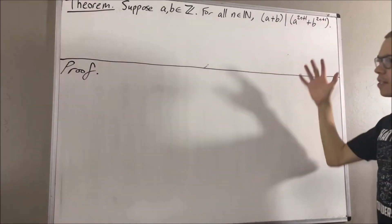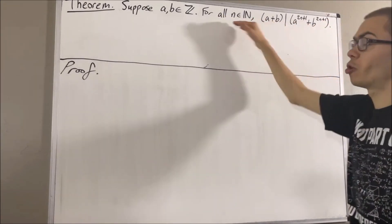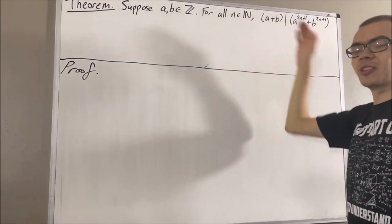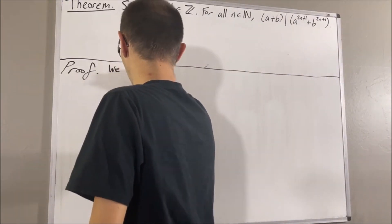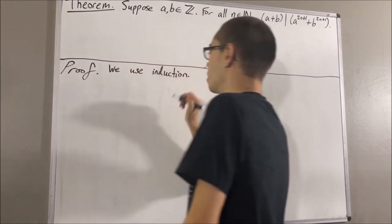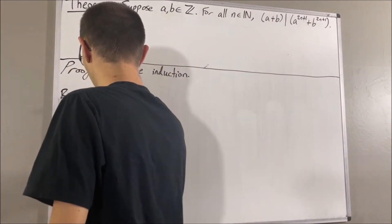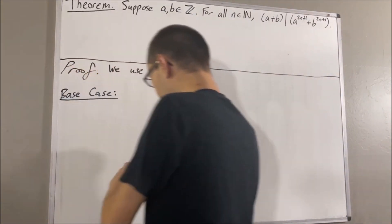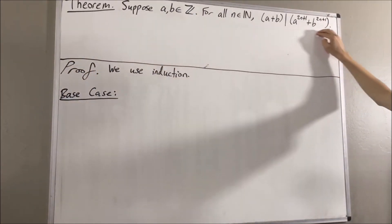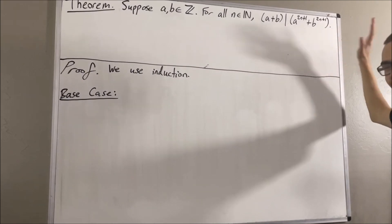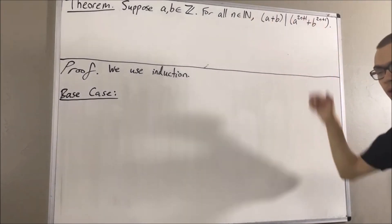Since we're trying to prove a statement about all natural numbers, let's use induction. So let's start with the base case. In the base case, we're trying to show that this is true in the case where n is equal to 0.